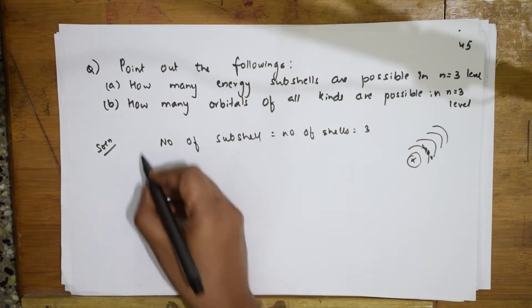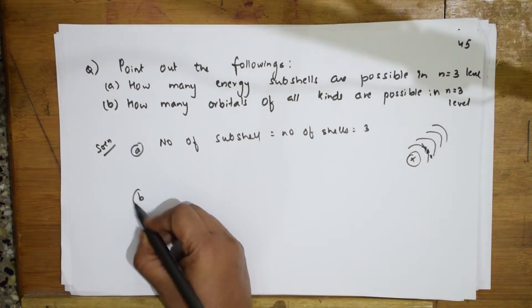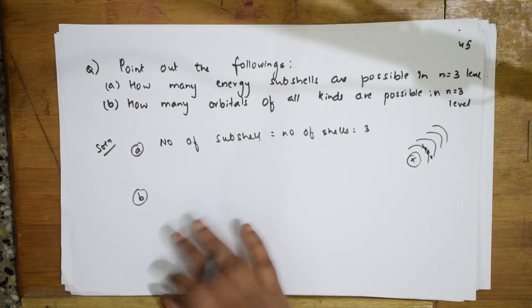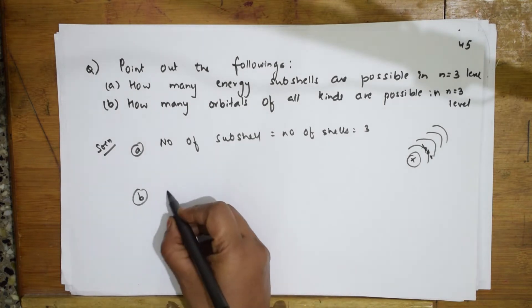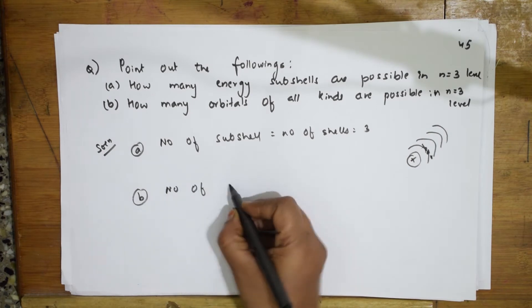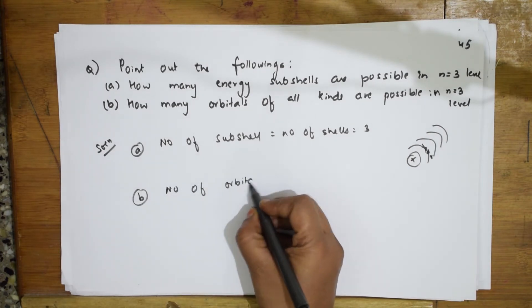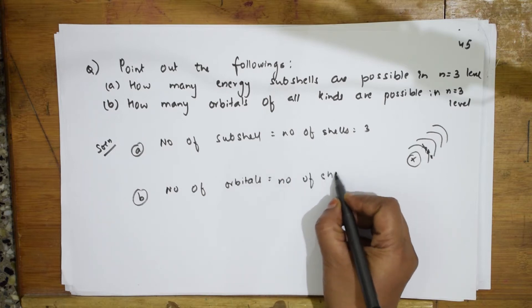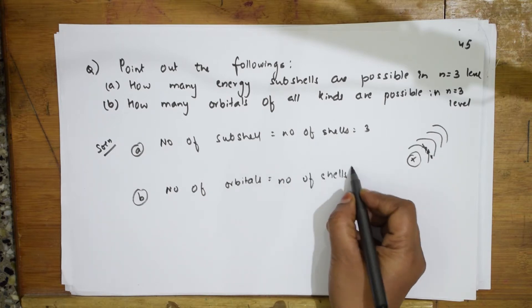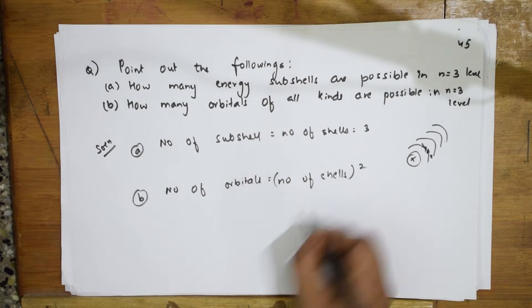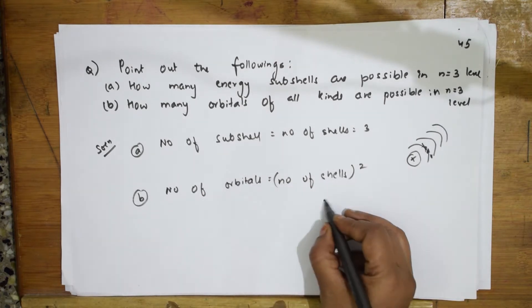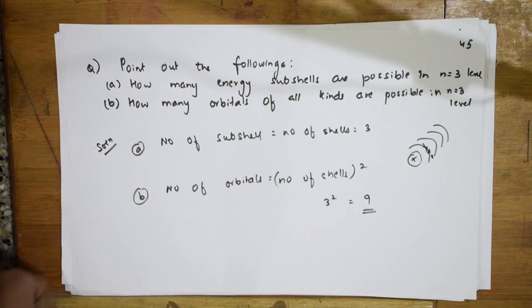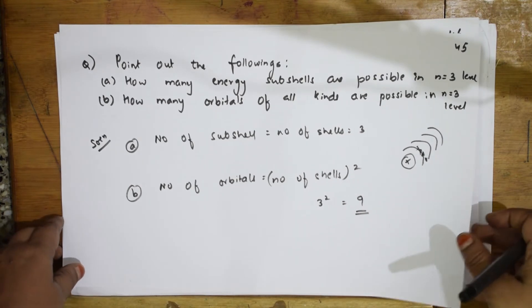Second part: how many orbitals of all kinds are possible in n=3? The formula for number of orbitals is equal to n squared. So how much is n? It is 3 squared, which is equal to 9. So this is your answer.